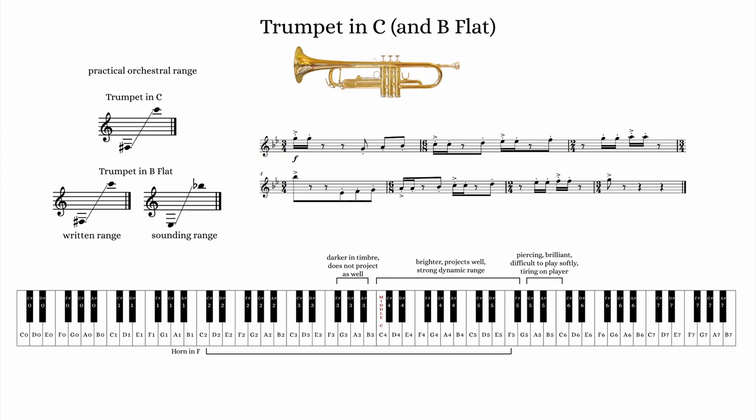The C and B-flat trumpets are capable of the majority of standard playing techniques, in addition to double and triple tonguing. Extended techniques on the trumpet are less common, though stylistic techniques from jazz and Latin genres are sometimes used in orchestral writing, including glissandi, rips, shakes, and bends.